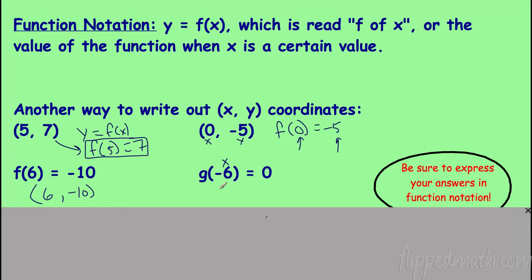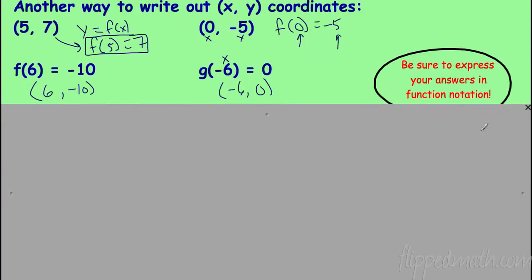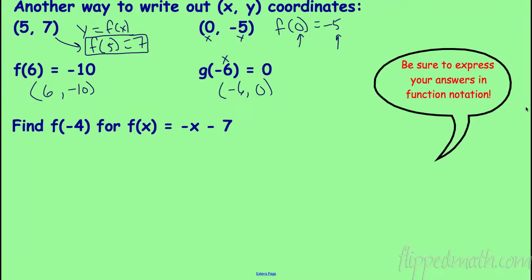We're going to see a lot of different function names. Traditionally it's f of x, but it doesn't have to be — it could be g of x, g of n, or other things. It's all the same concept: one value is the input and the other is the output. For example, if the input is -6 and the output is 0, that's all we're talking about.